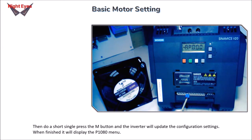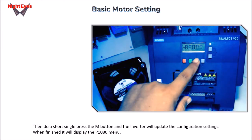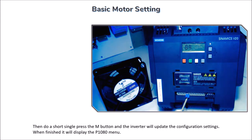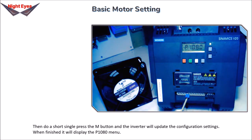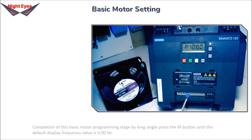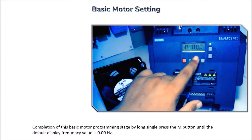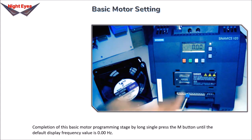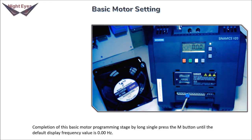Then do a short single press of the M button and the inverter will update the configuration settings. When finished it will display the P1080 menu. Complete this basic motor programming stage by long pressing the M button until the default display shows a frequency value of 0.00 Hz.